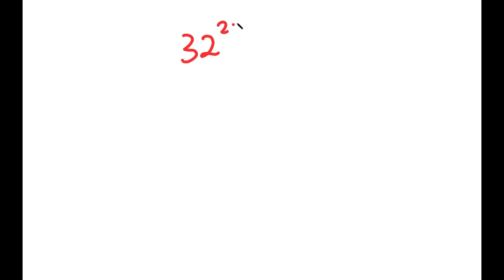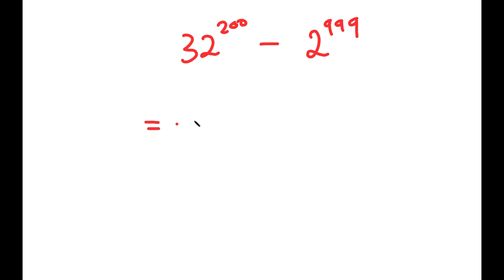In this video, I'm going to solve the problem 32 to the power of 200 minus 2 to the power of 999. So to solve this, I'm going to first rewrite 32 as 2 to the power of 5.